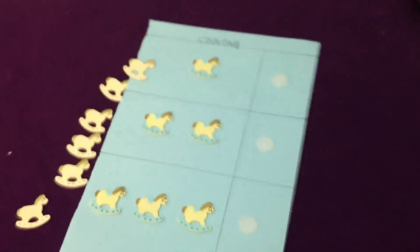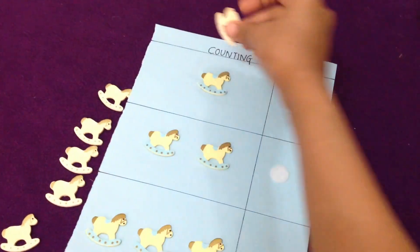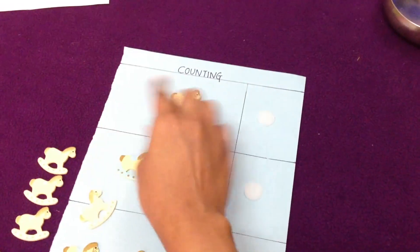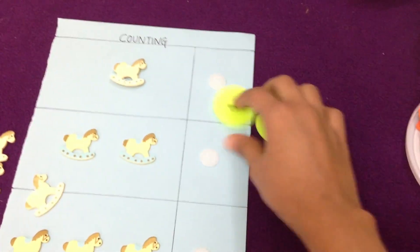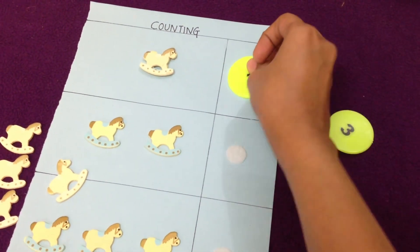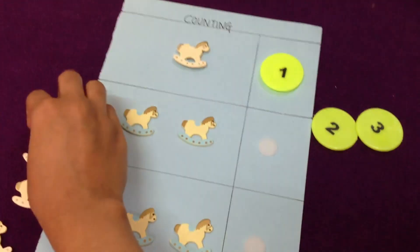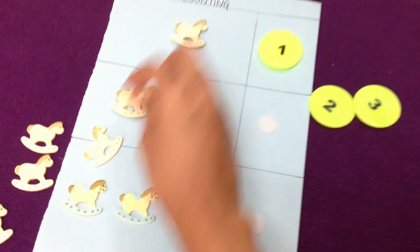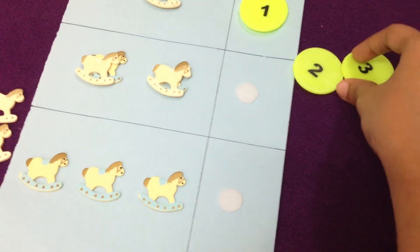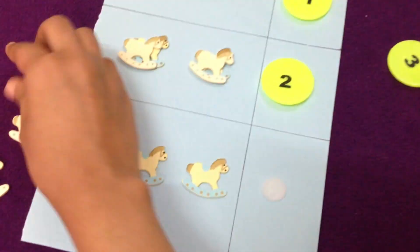Basically all that they have to do is match the objects. I hope you can see it now. They have to match the horses, so one horse, and then I have tokens here, so they will say one. So they'll put one here. Then two, so they'll put two here.